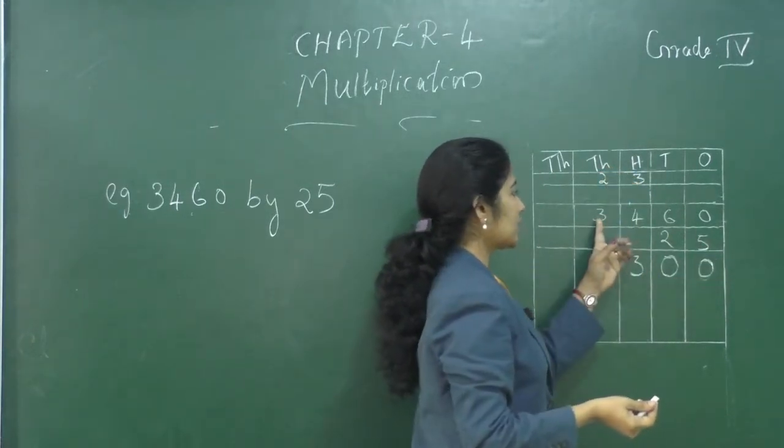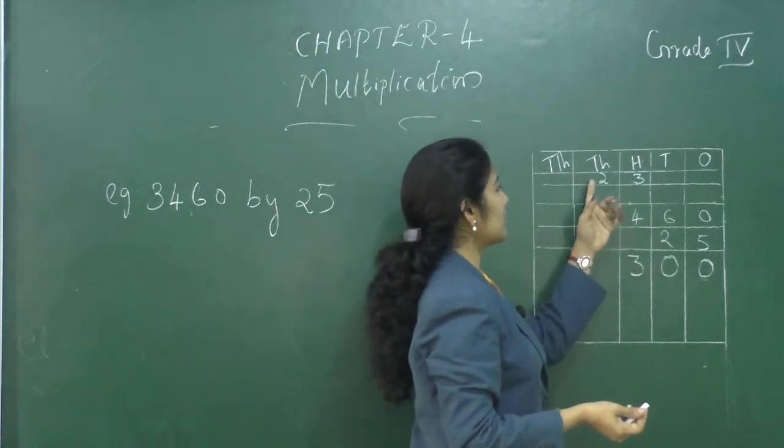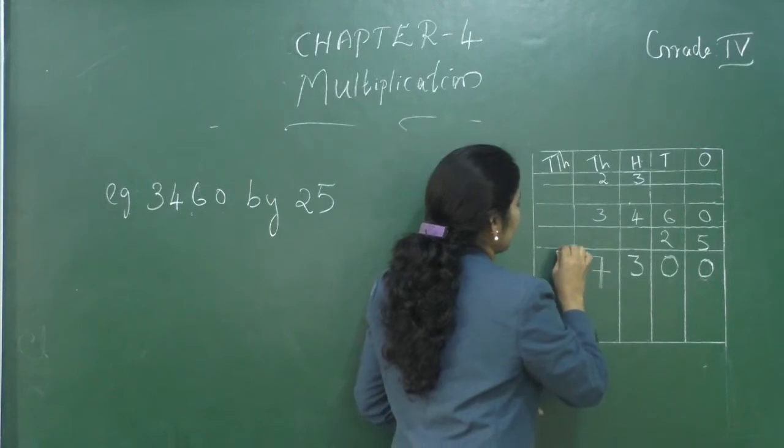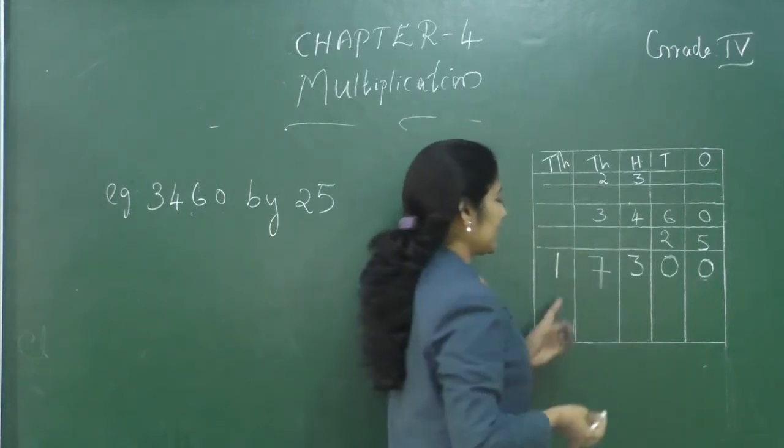Now, 5 into 3? 15. 15 plus 2? 17. 7 we can write at the 1000's place and at the 10,000's place, we can write 1.